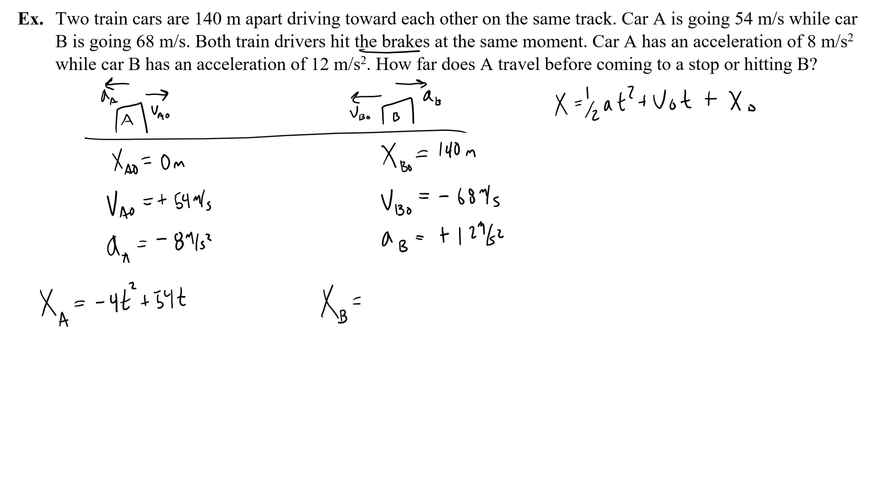For XB, the position of the second car, half of the acceleration would be half of 12, or positive 6t squared. Then I would do the initial velocity times time, or in this case, negative 68t. And the initial position of a positive 140. Okay, so now I have my two math-friendly equations.